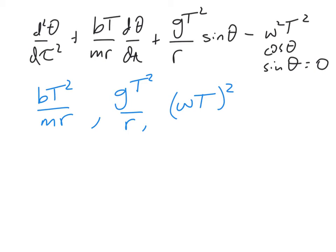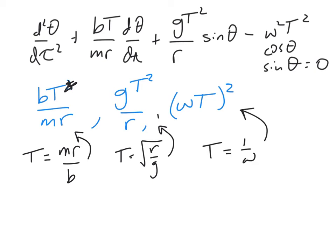g and r and m and b and omega are all set by the problem, but T is arbitrary. We actually have some choices for T. Oh, I made a mistake here. There's no squared. If I set T equal to mr/b, then this thing would be one. And if I set T equal to the square root of r over g, then this thing would be one. And if I set T equal to one over omega, then this thing will be one. These are three different timescales.